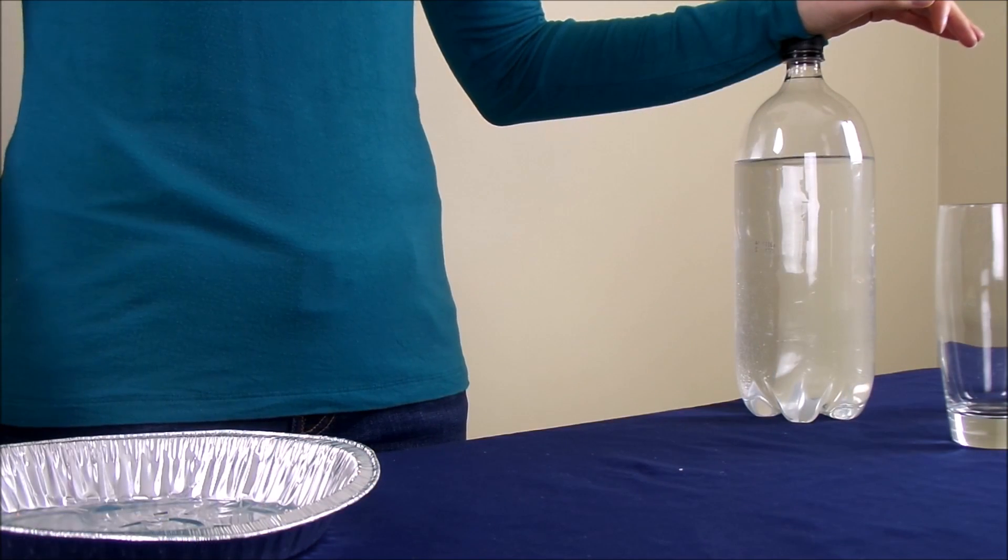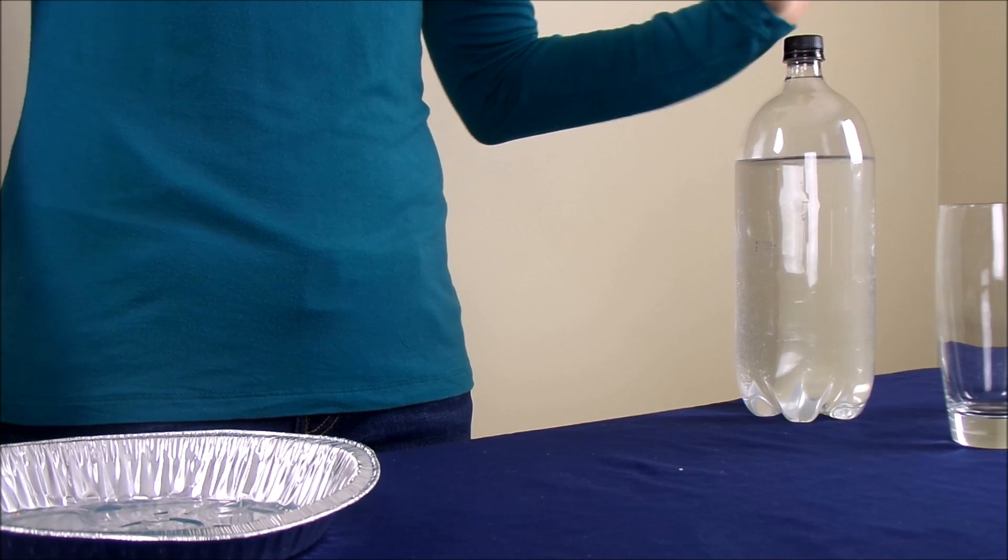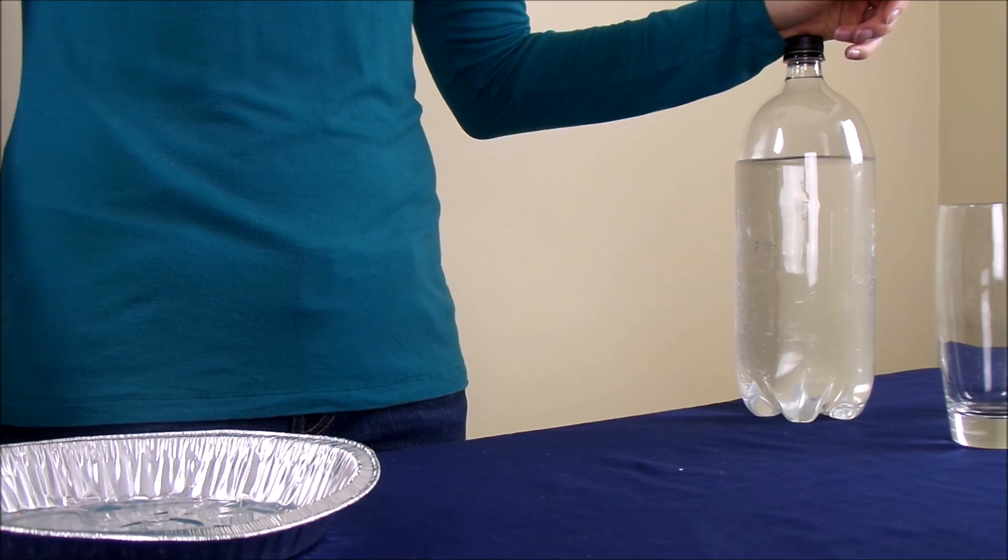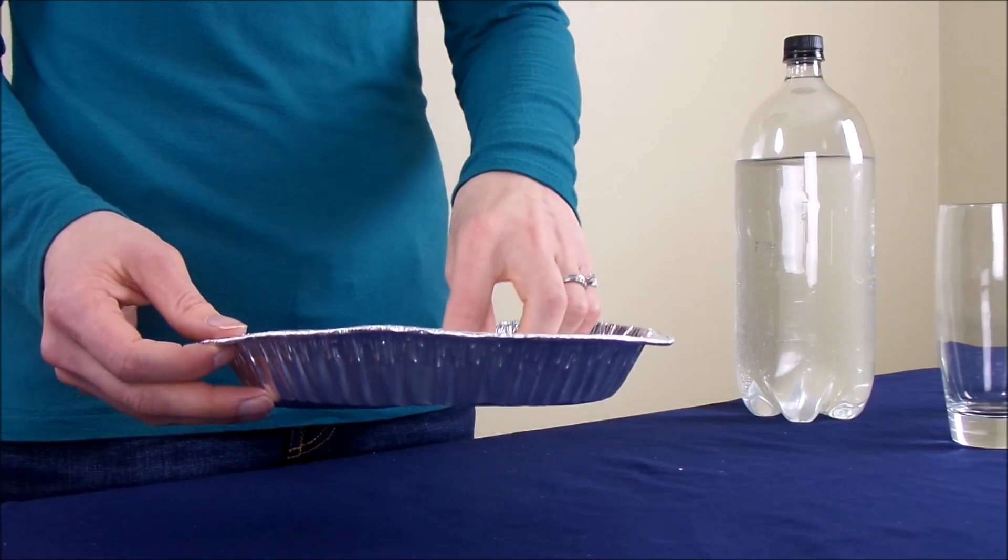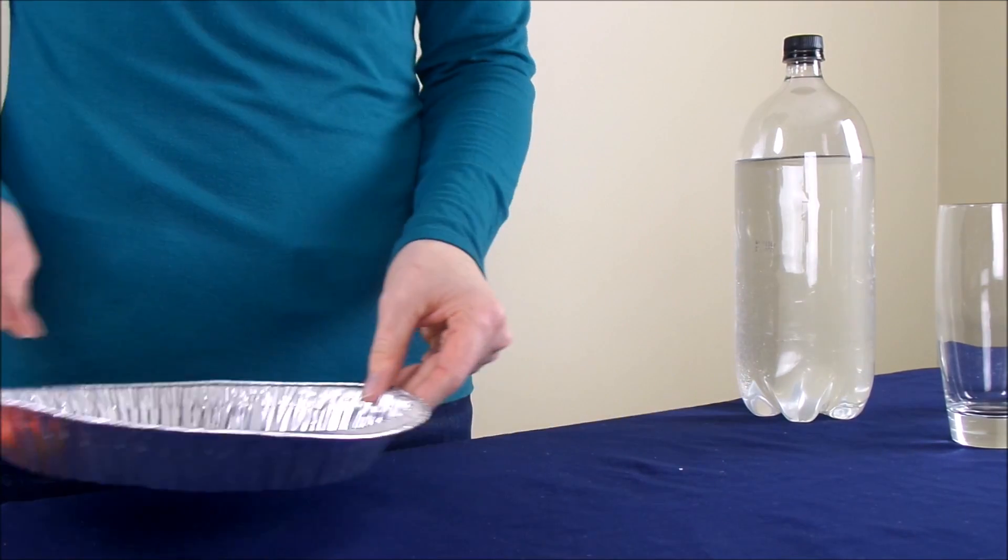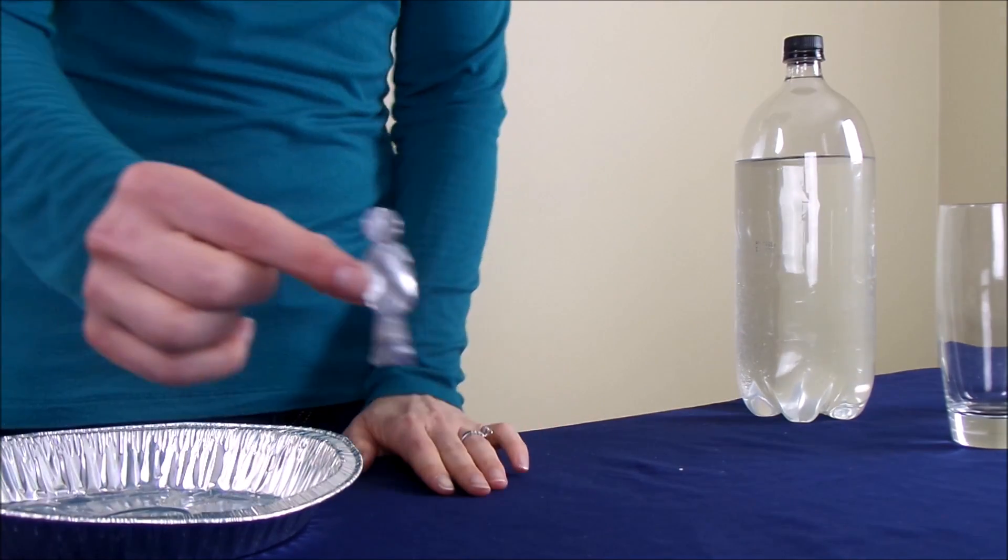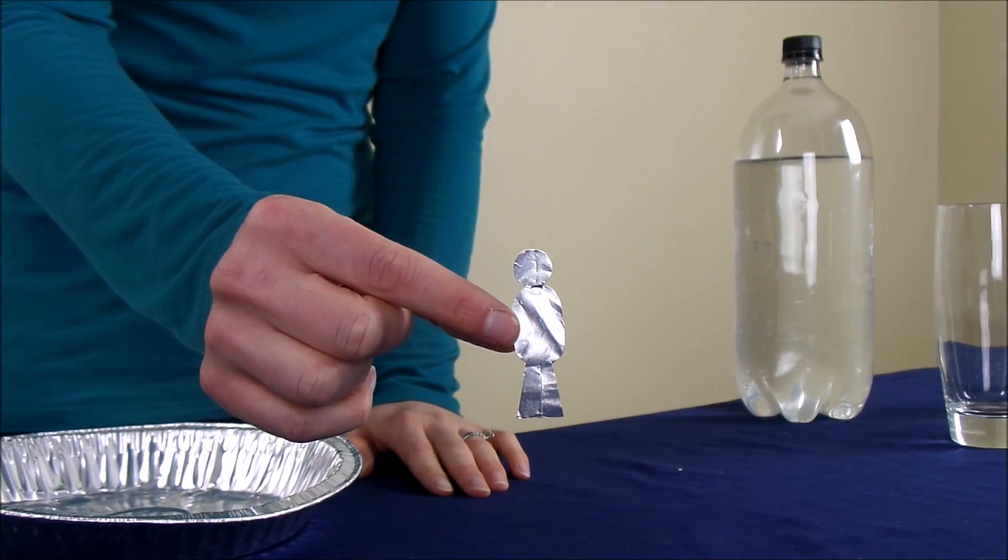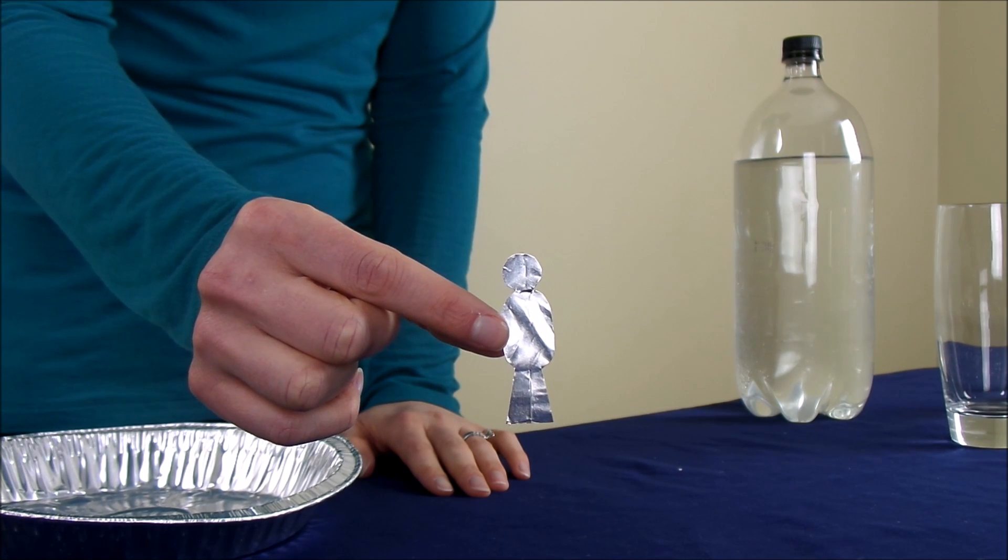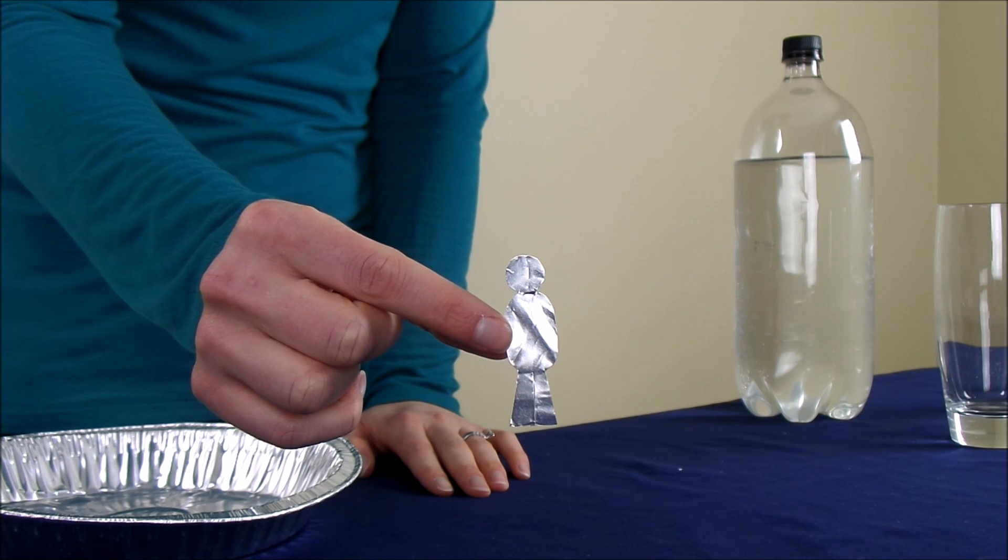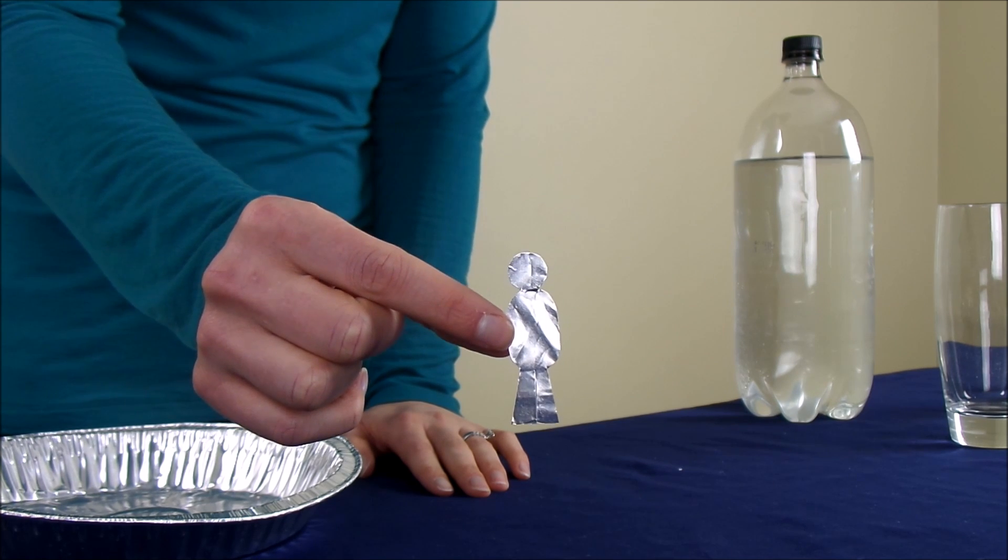Okay, for the first step of the Bottle Scuba Diver Experiment, we're going to need to cut out our diver. To do that, you're going to need some heavy-duty foil. I'm using a pie plate. What you're going to want to do is cut out the shape of a diver to look like this. You can head over to CoolScienceExperimentsHeadquarters.com to get a template for that.